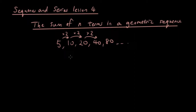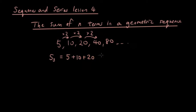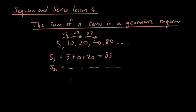If I want to know the sum of the first 3 terms, then what is the answer? We have 5 plus 10 plus 20 so that is 35. But if I want to know the sum of let's say 30 terms, it's going to be very hard to write out all the terms and it's going to take very long to add them all together, so I need a formula for it.